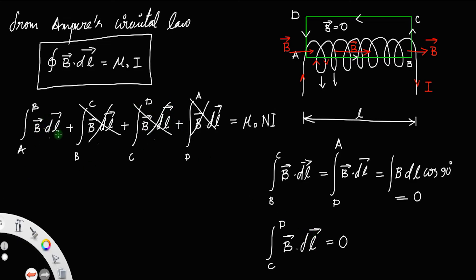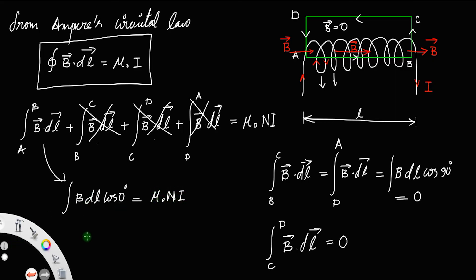So only the integral along arm AB remains. Along AB, B and dL are in the same direction, so we apply cos 0°, giving: integral of B dot dL equals μ₀nI.